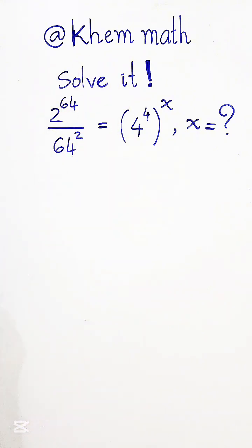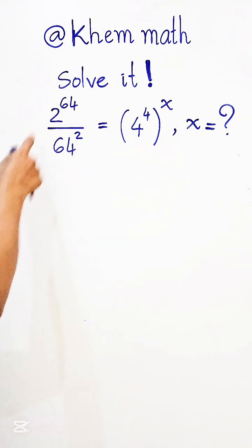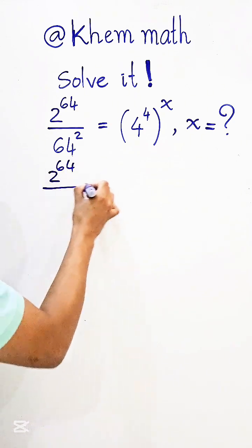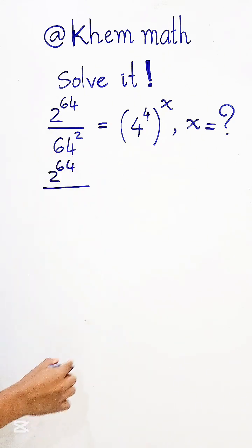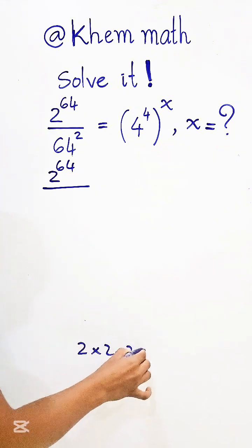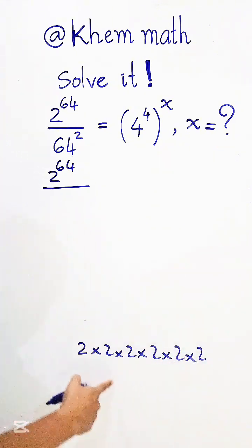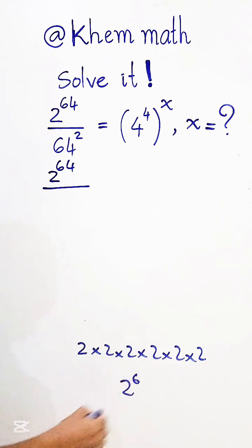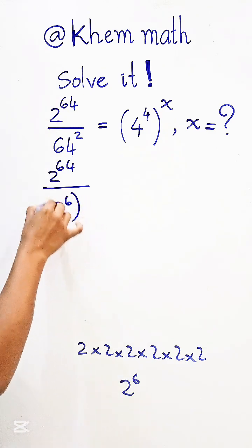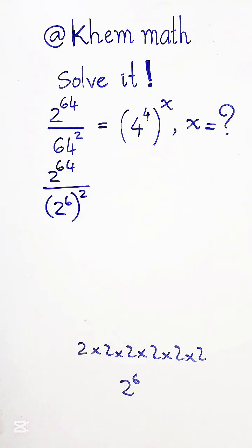The first step is to write everything in the same base. So 64 equals 2 times 2 times 2 times 2 times 2 times 2, which equals 2 to the power 6. So we get 2 to the power 6 divided by 2 to the power 2, or squared.